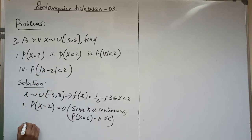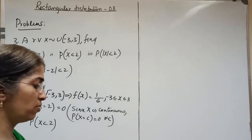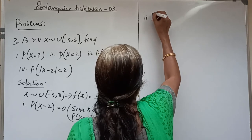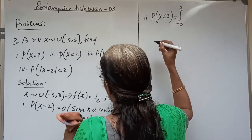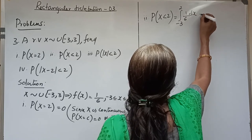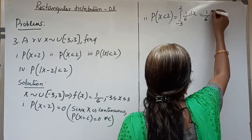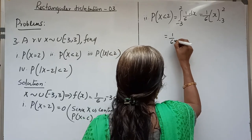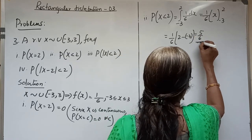Now we find P(X < 2). P(a < X < b) = integral from a to b of f(x) dx. So P(X < 2) = integral from -3 to 2 of (1/6) dx = (1/6)[x] from -3 to 2 = (1/6)(2 - (-3)) = (1/6)(5) = 5/6.